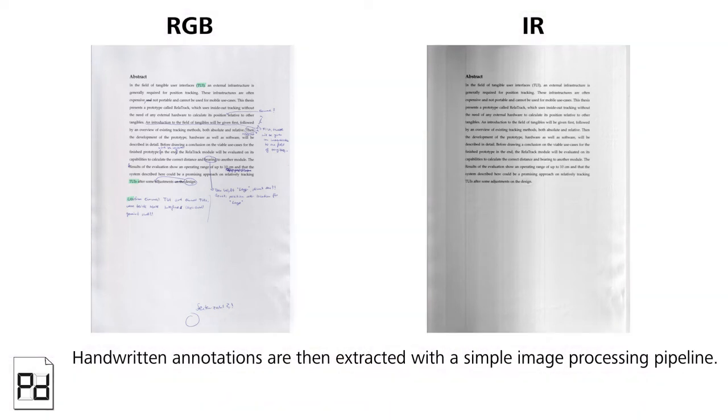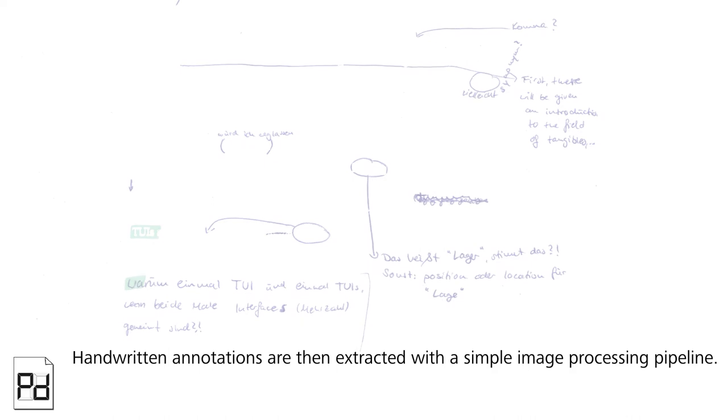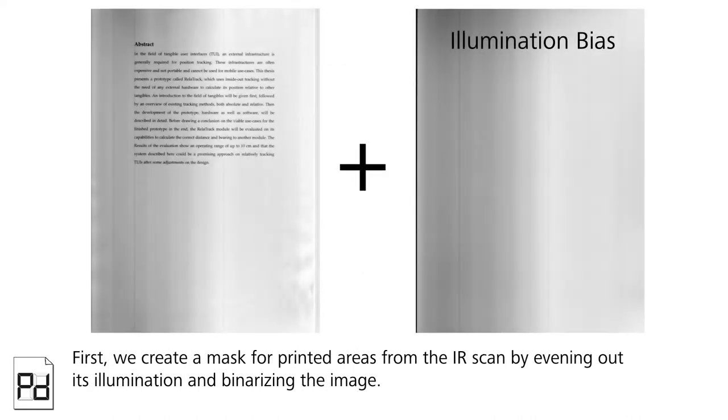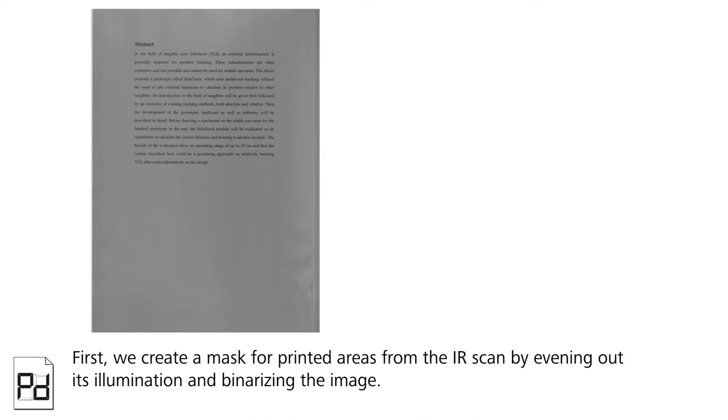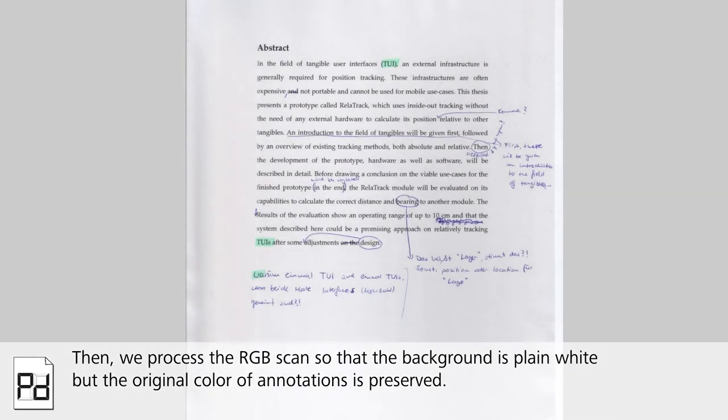Handwritten annotations are then extracted with a simple image processing pipeline. First, we create a mask for printed areas from the IR scan by evening out its illumination and binarizing the image.